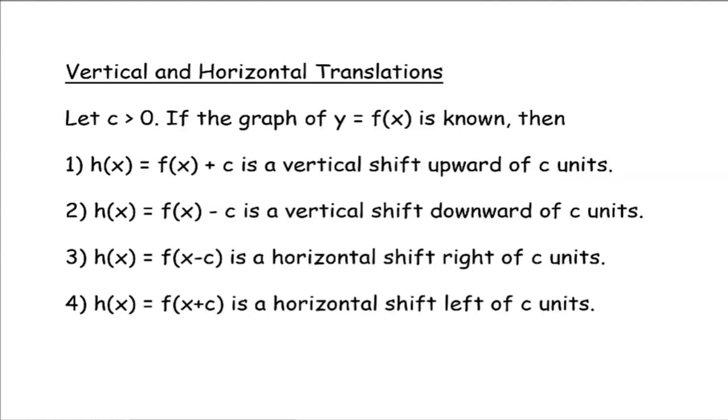Vertical and horizontal translations. Let c be some number greater than zero, some real number greater than zero. So if we know the graph of y equals f(x), it doesn't matter what the graph is. I just use the parabola because it's easy to draw, but this applies to every single function. If we know the graph of some function, then if you take some constant number and add that to your original function, then you get a new function, and all that's going to be is a vertical shift up of c units.